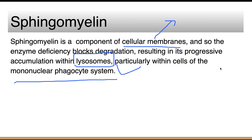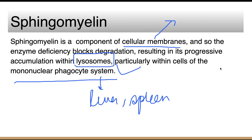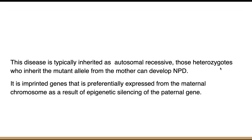This accumulation occurs mostly in the cells of the mononuclear phagocyte system, including macrophages in organs such as the liver and spleen. Regarding genetics, this disease is typically inherited as an autosomal recessive disorder.